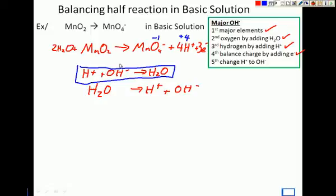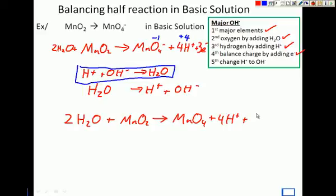We're just going to add water to this. We're going to add this together, and therefore it's going to cancel out these hydrogens. So I'm going to rewrite my equation right here: 2H2O plus MnO2 makes MnO4- plus 4 hydrogens and 3 electrons.